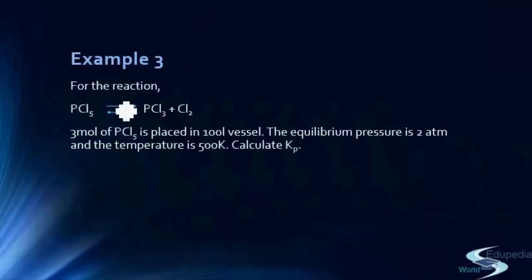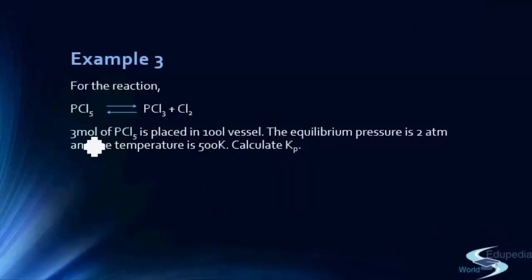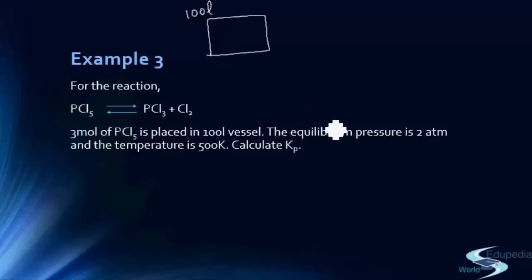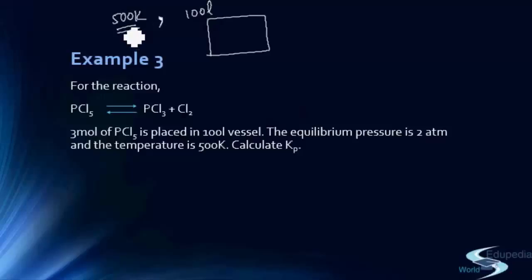The first example says that for the reaction PCl5 → PCl3 + Cl2, three moles of PCl5 are placed in a 100-liter vessel. The equilibrium pressure is 2 atm and the temperature is 500 Kelvin, which is assumed constant throughout the reaction.